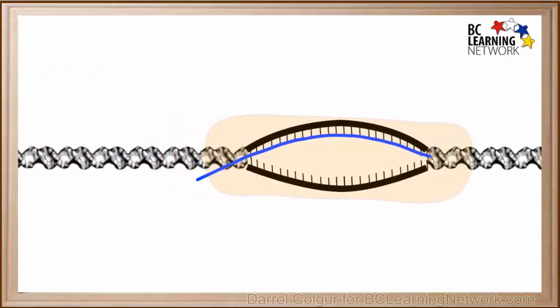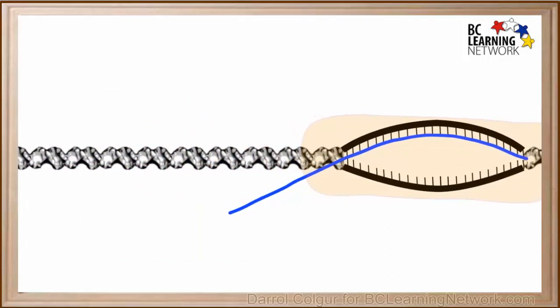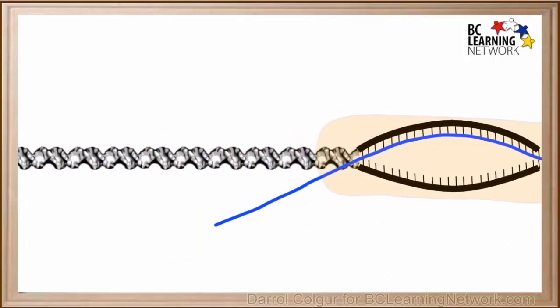As the bubble moves down the DNA, the mRNA molecule gets longer as more nucleotides are added to it. This continues to happen until it reaches the terminator sequence on the gene.